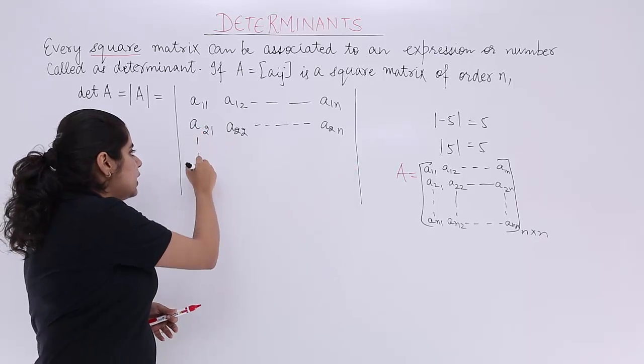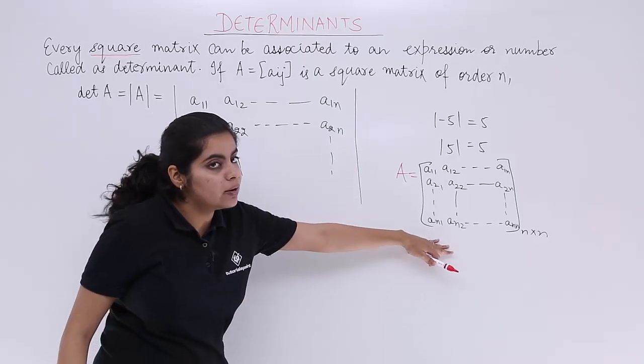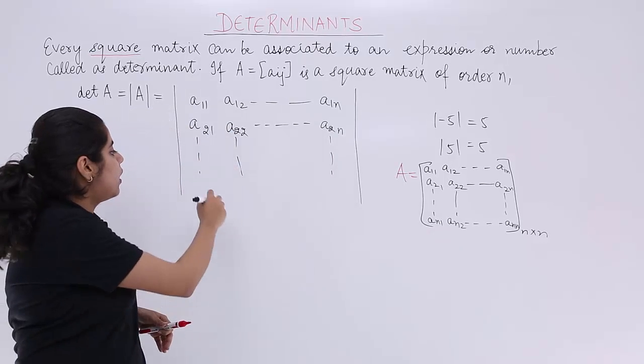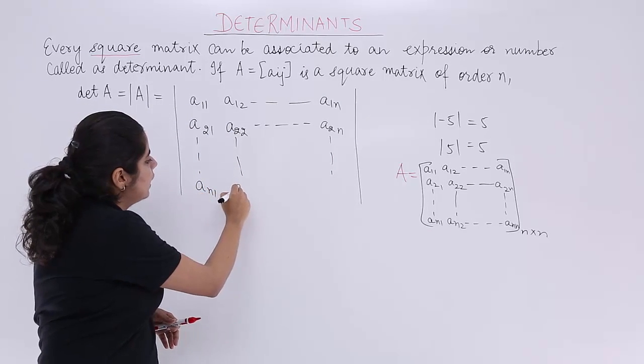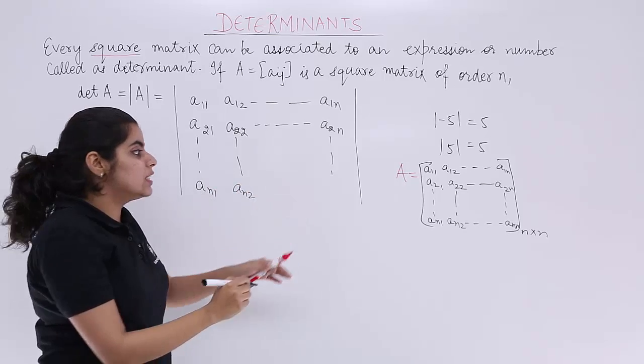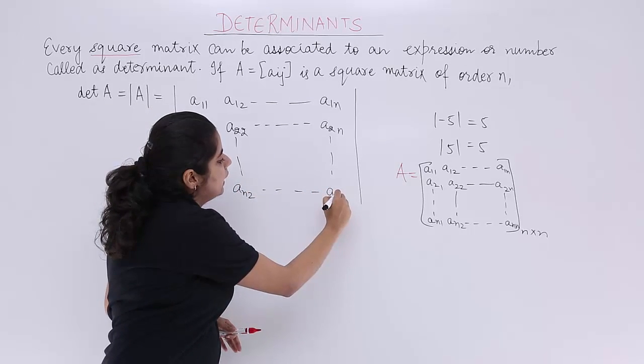Downwards you will move in the same manner as we move here. The last row would be AN1, AN2 and so on up till ANN.